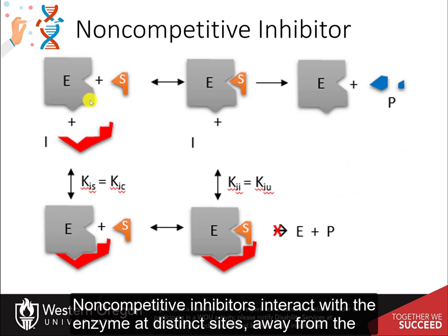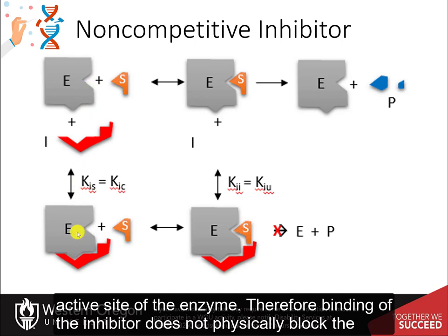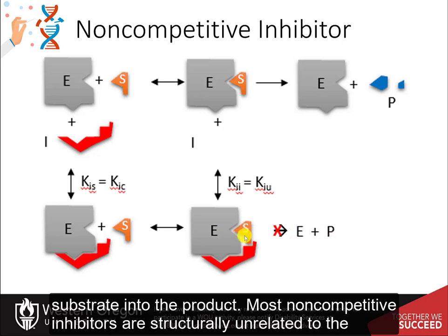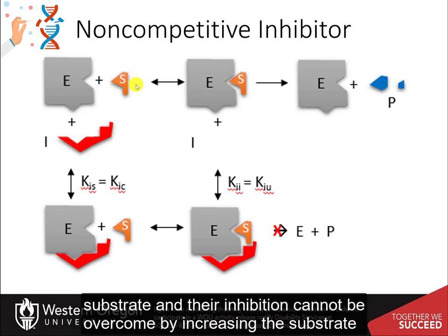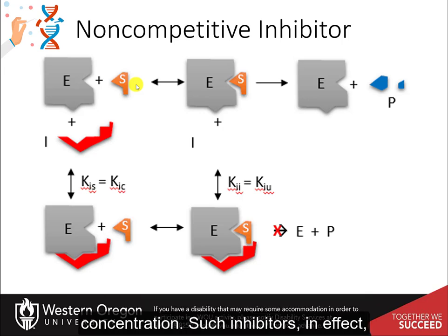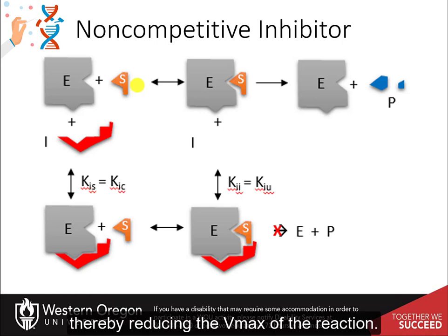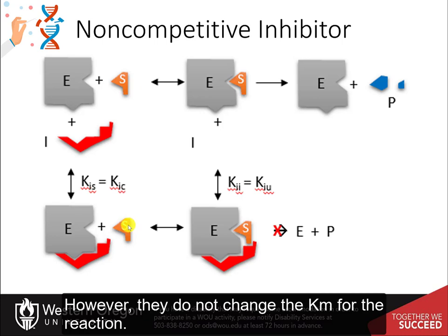Non-competitive inhibitors interact with the enzyme at a distinct site away from the active site. Therefore, binding of the inhibitor does not physically block the substrate from binding, but it does prevent the subsequent reaction and conversion of the substrate into the product. Most non-competitive inhibitors are structurally unrelated to the substrate, and their inhibition cannot be overcome by increasing the substrate concentration. Such inhibitors reduce the concentration of the active enzyme in solution, thereby reducing the Vmax of the reaction. However, they do not change the KM for the reaction.